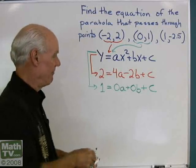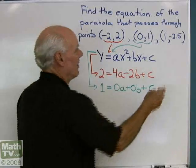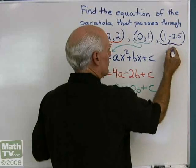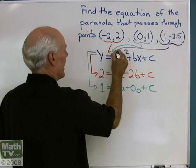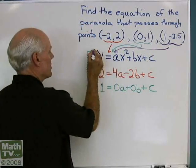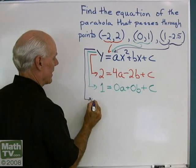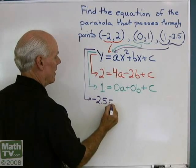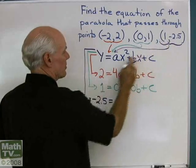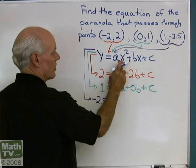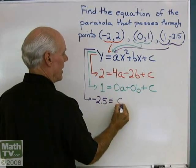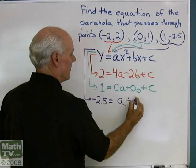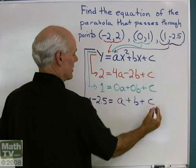One final one here. I have x equal one, y equal negative 2.5. Let's substitute that into this equation. When I do that, I get negative 2.5 for y is equal to — well, x is one, so one squared is one times a is 1a, one times b is 1b, and then I have c.